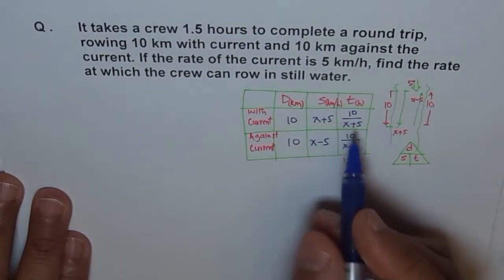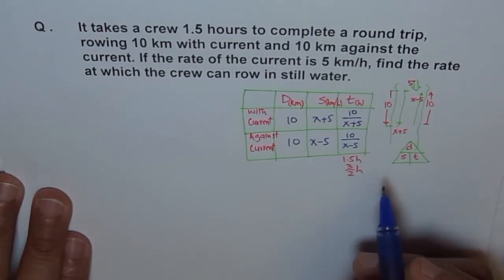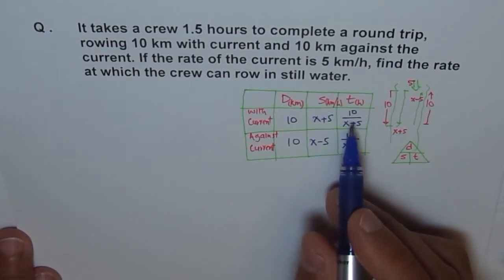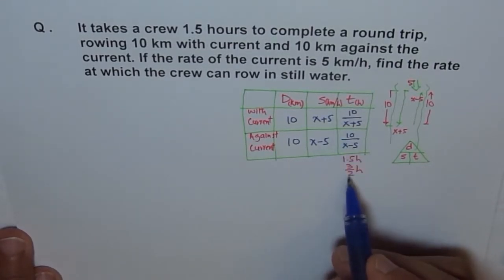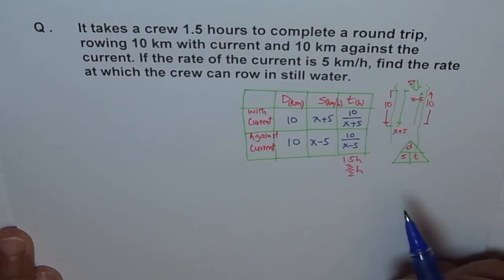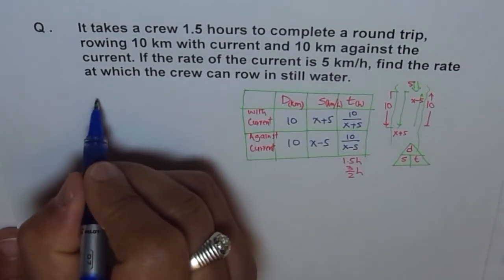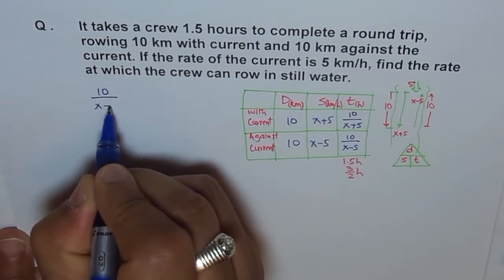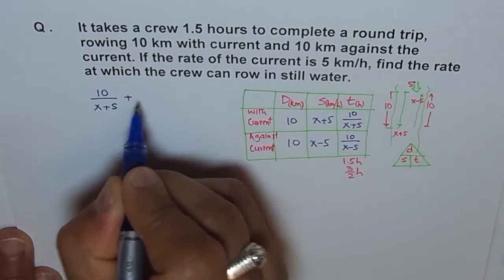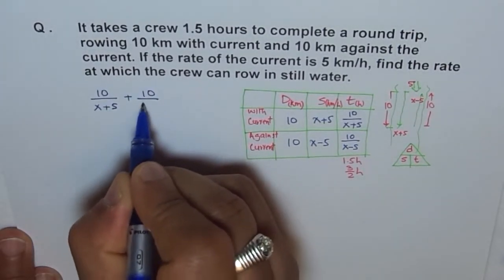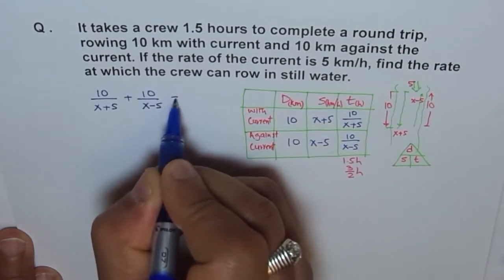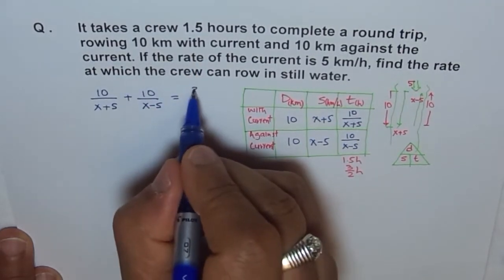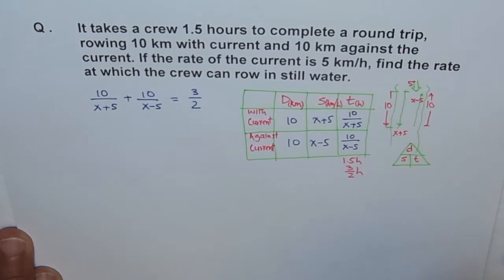So, let's now, we have our equation, right? So, what is our equation? Our equation is that the total time is 3 over 2. So, let's go ahead with our solution now. So, we have 10 over X plus 5 plus 10 over X minus 5 is equal to 1 and a half, which is 3 over 2. Correct?